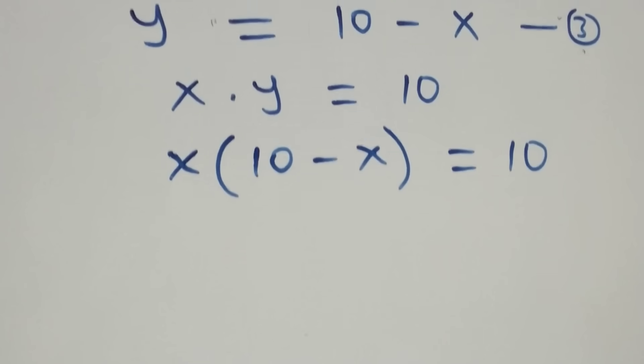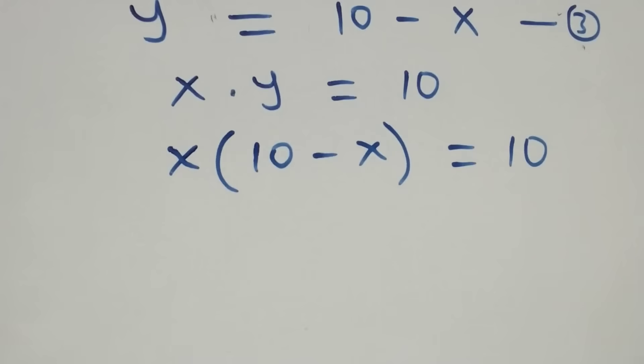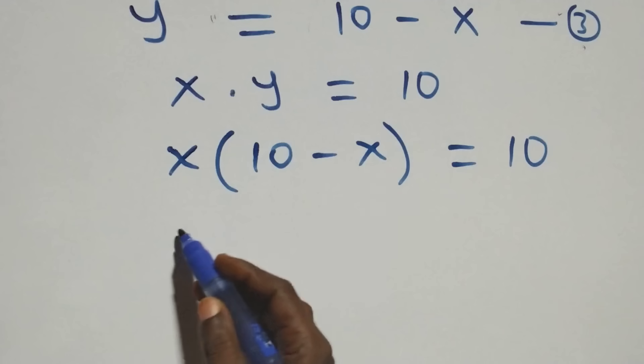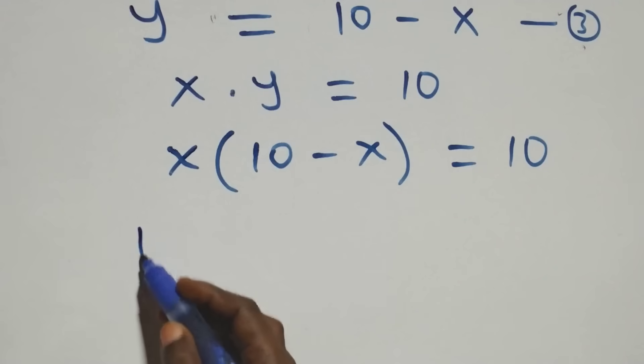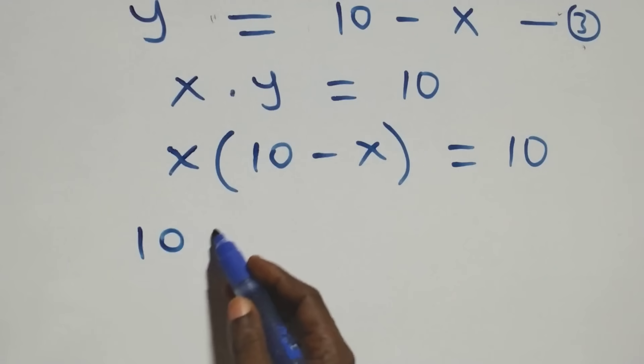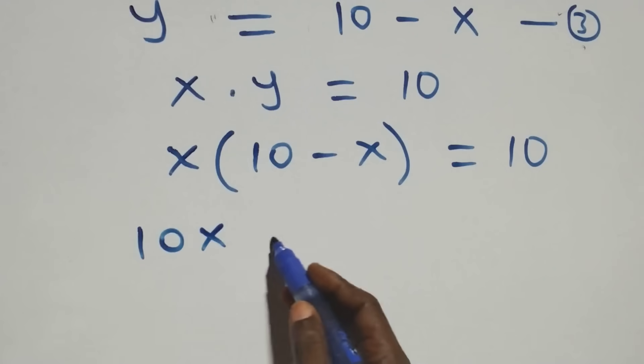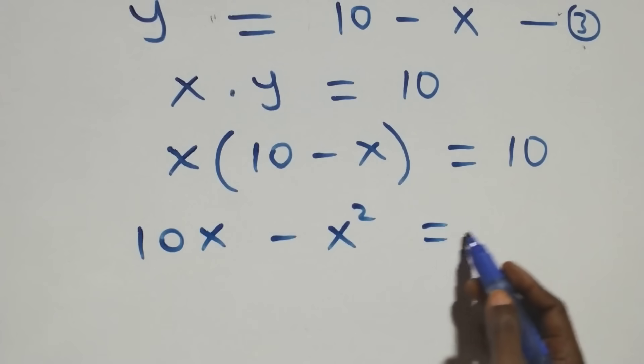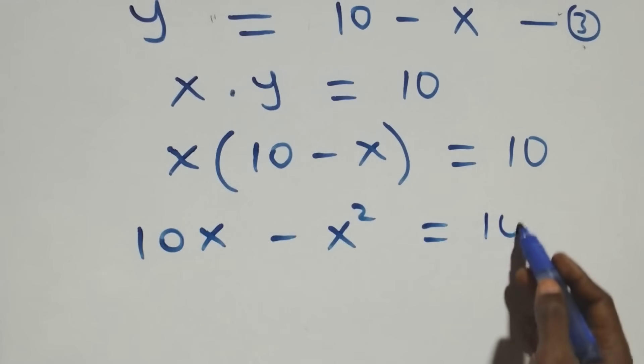The next step: x opens this bracket, and this becomes ten x minus x squared equals to ten.